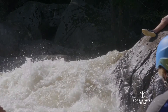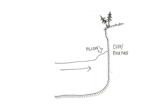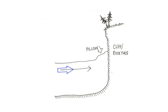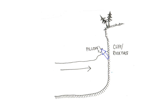Another feature is a pillow. Say you have a rock or a wall and the river is flowing into it, but there's not quite enough water to get over it. The water will deflect off of the rock, crashing back onto itself. This is called a pillow. It's not necessarily a good or bad thing — it's just something good to be able to recognize.